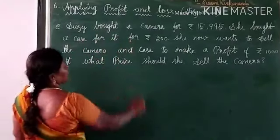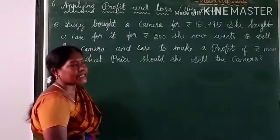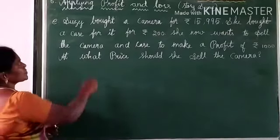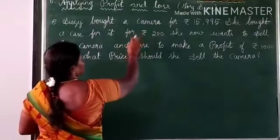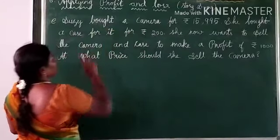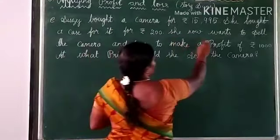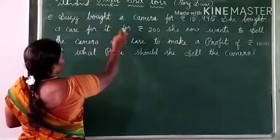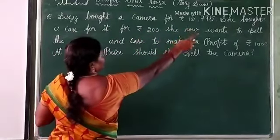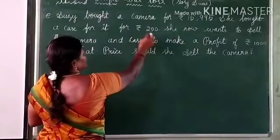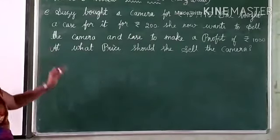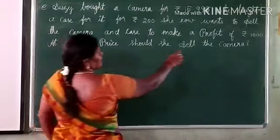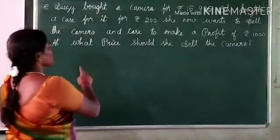Suji bought a camera for rupees 15,995. She also bought a case for rupees 200. So she bought both the camera and the case. Now she wants to sell the camera and the case to make a profit of rupees 1000.